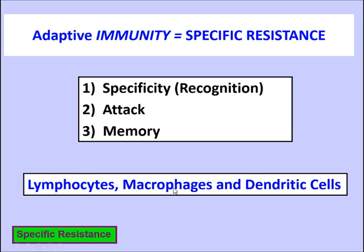The types of cells we'll primarily be talking about are lymphocytes, macrophages, and dendritic cells. Lymphocytes are a type of leukocyte, and they consist of T lymphocytes or T cells, B lymphocytes or B cells, and natural killer cells. Natural killer cells act in a nonspecific manner, so they were addressed earlier. Macrophages are phagocytes in the tissue, and dendritic cells are special types of macrophages in the skin.